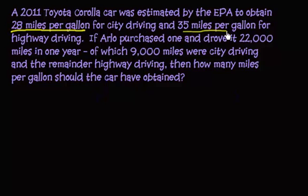and 35 miles per gallon for highway driving. If Arlo purchased one and drove it 22,000 miles in one year of which 9,000 miles, that seems important, were city driving and the remainder highway driving, then how many miles per gallon should he have obtained overall?